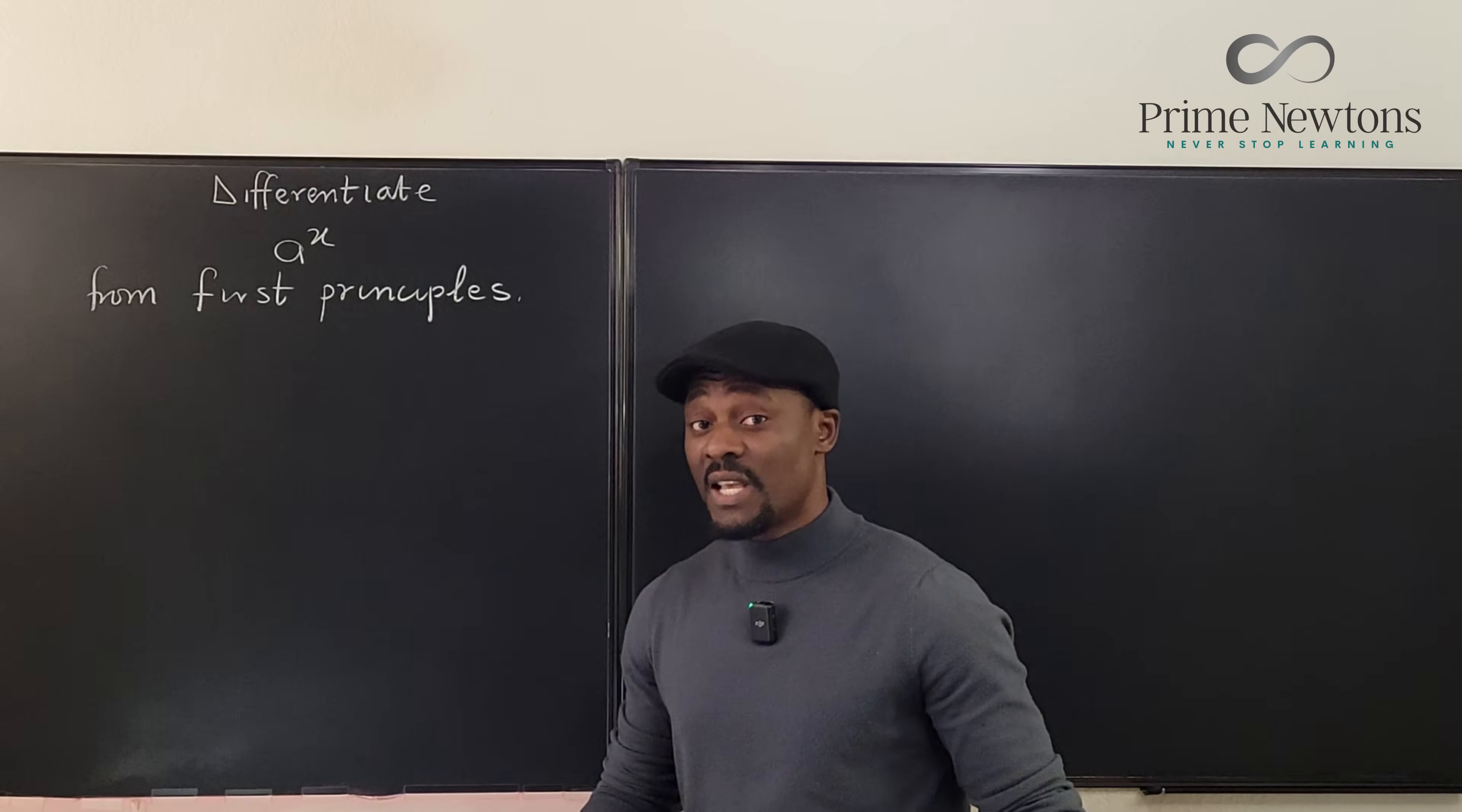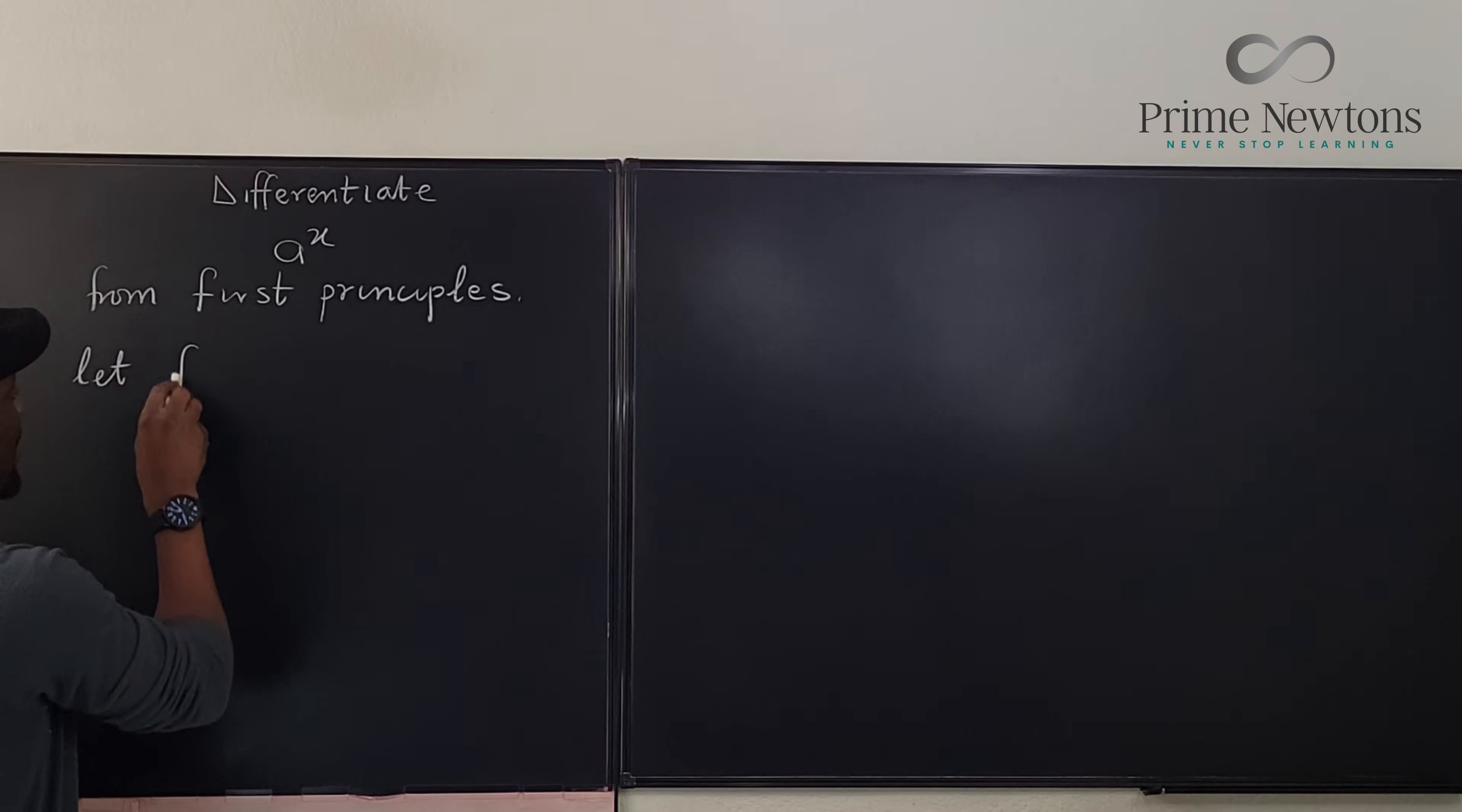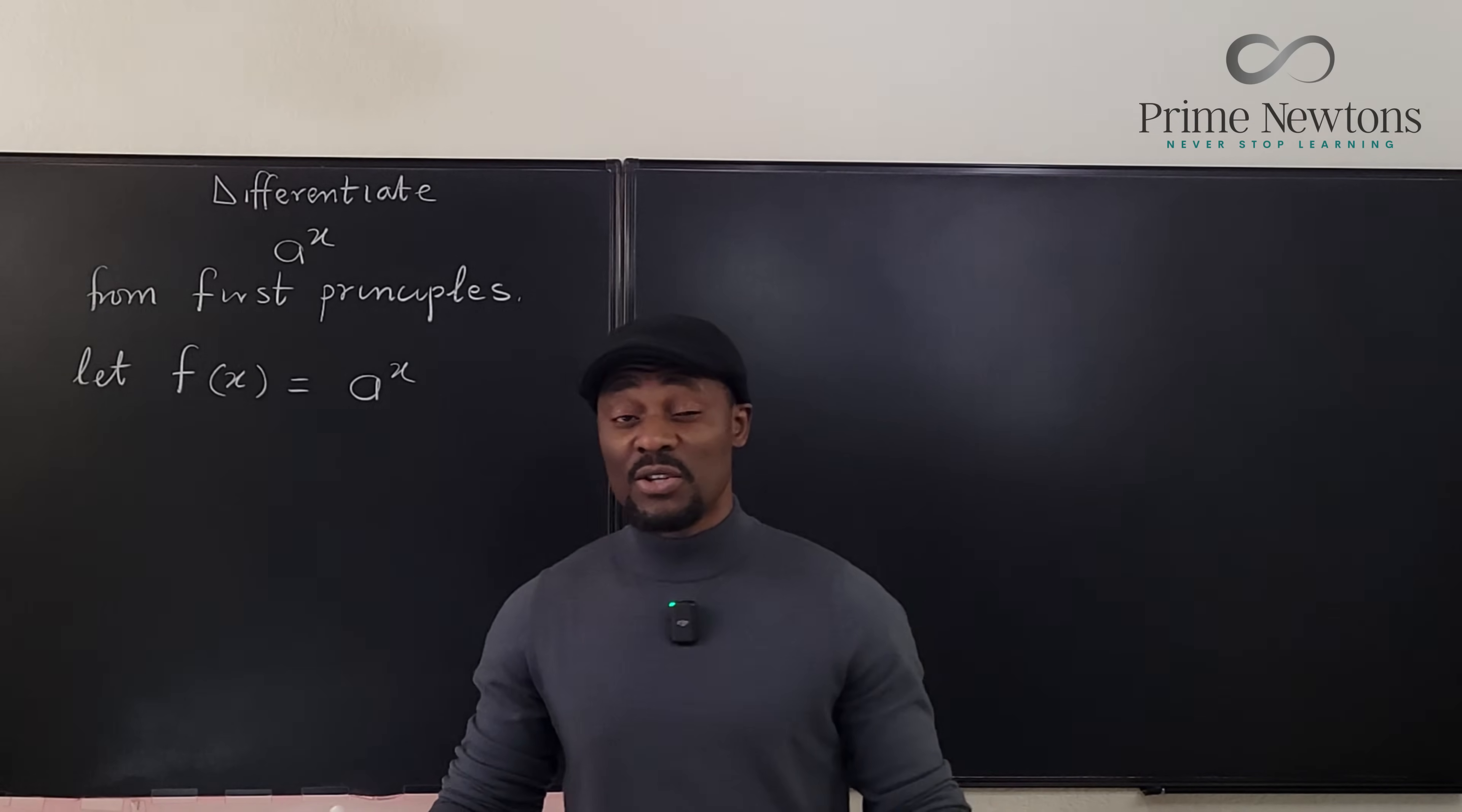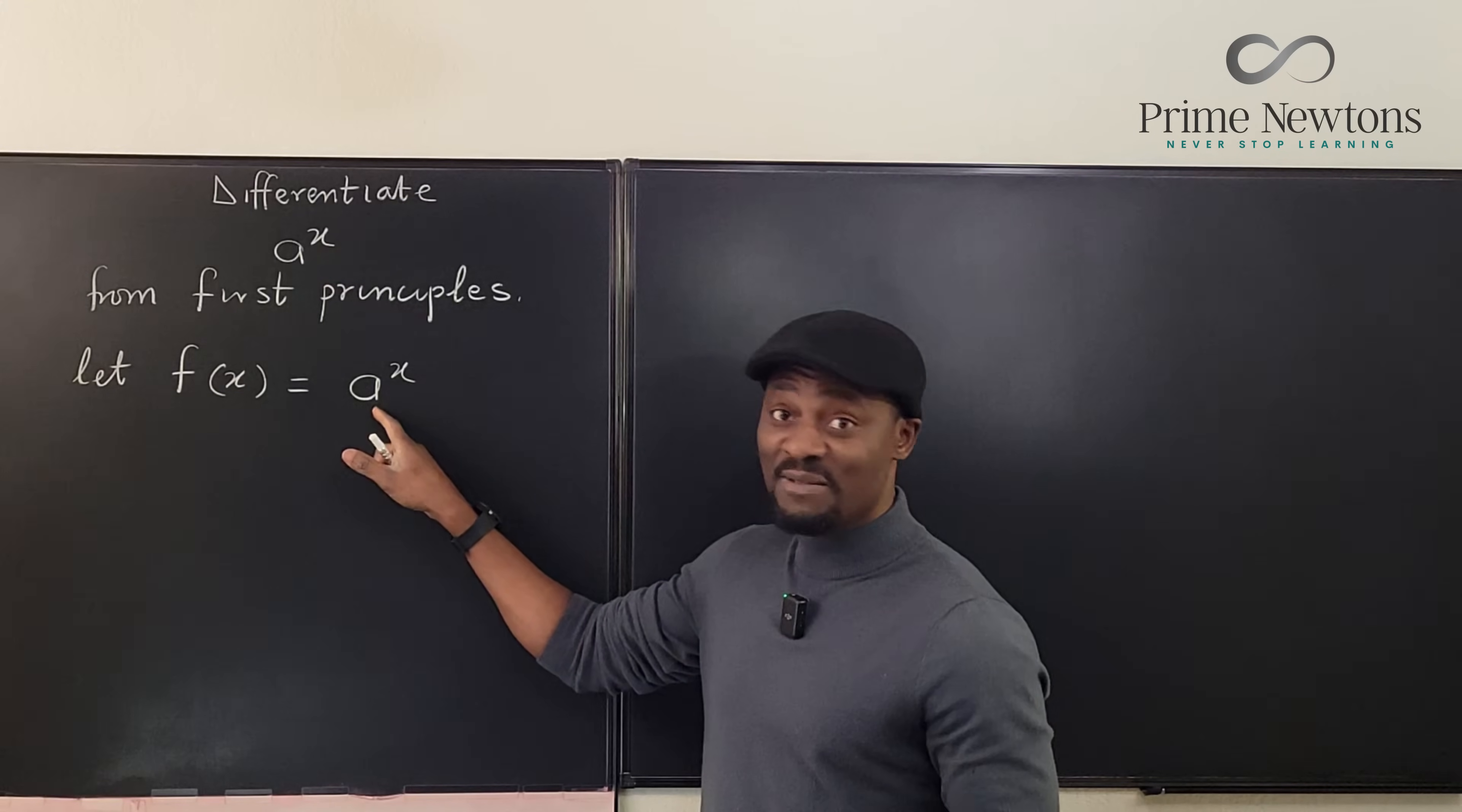So generally this is how you start this kind of derivation. You're going to say let f of x be equal to a to the x. I know I've covered the series on many types of functions but someone reminded me that I never did for exponential function with a different base.